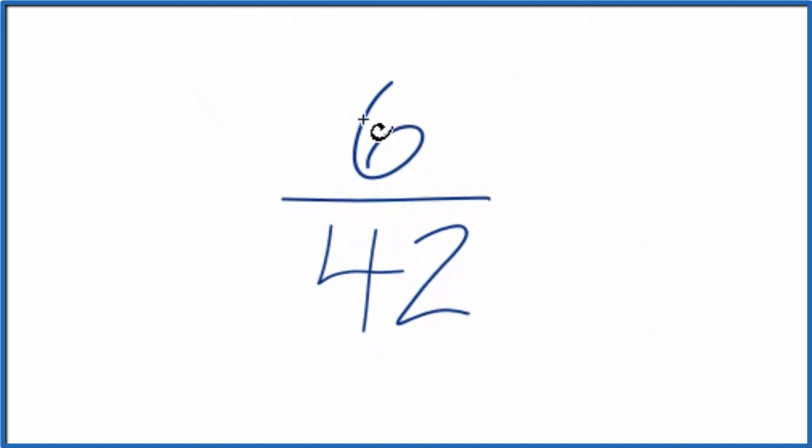To do that, we want to find a common factor, a number, a whole number that goes into 6 and 42 evenly.